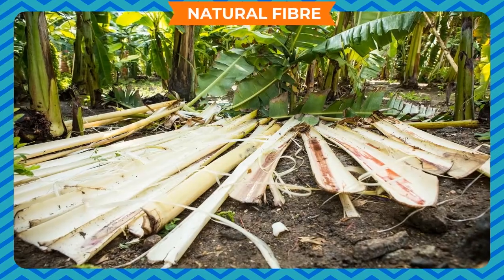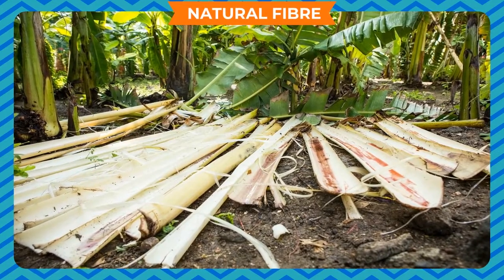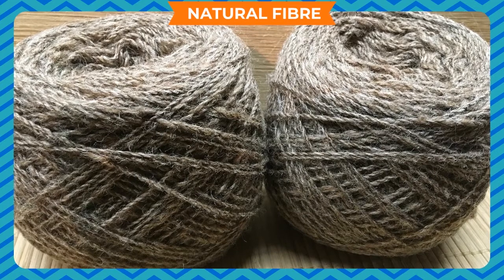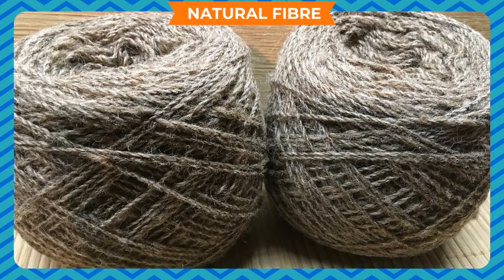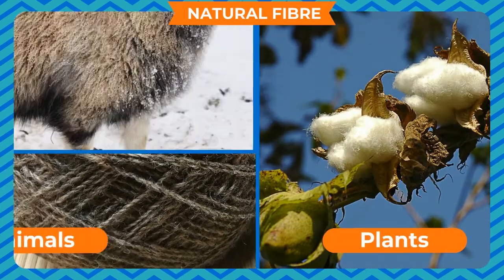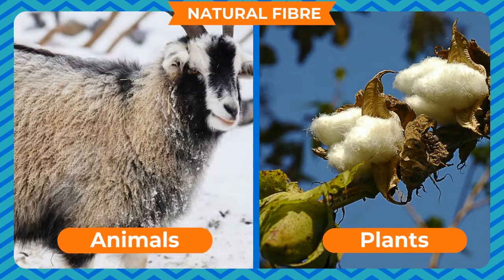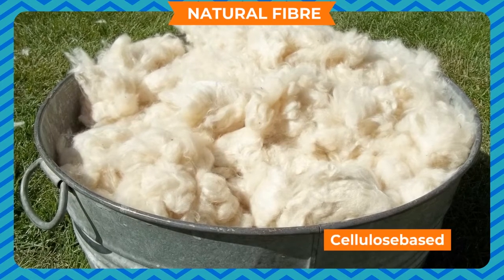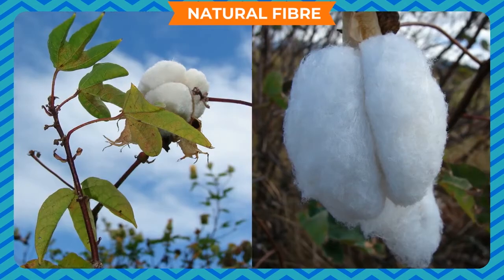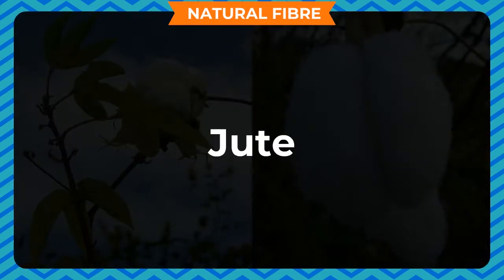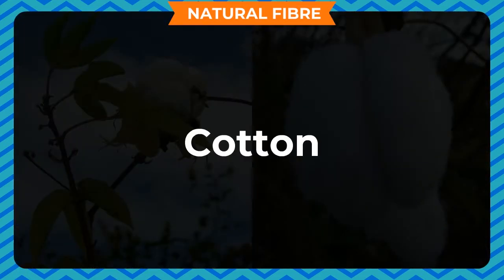Natural Fibers. These fibers are obtained from nature or they occur in nature. They might be of plant or animal origin. Plant fibers are made up of cellulose present in the plants. These include jute, flax, cotton, etc.